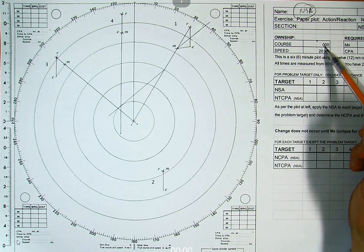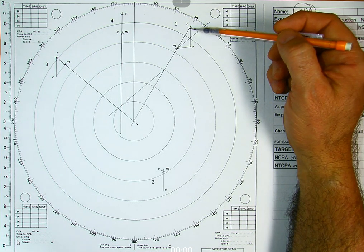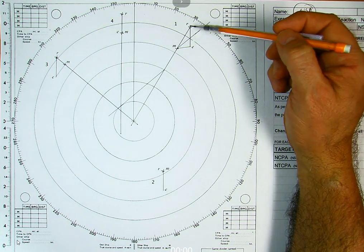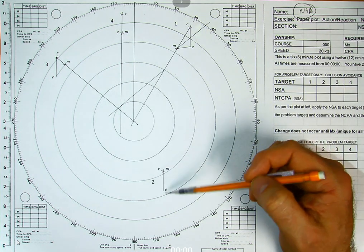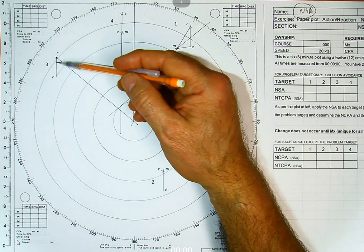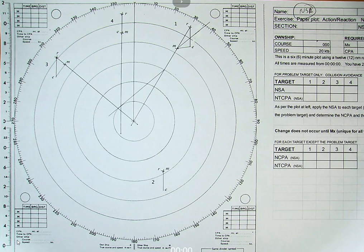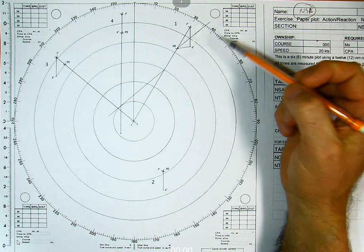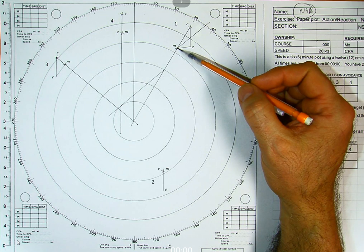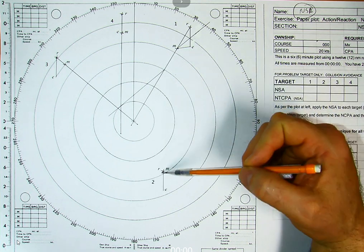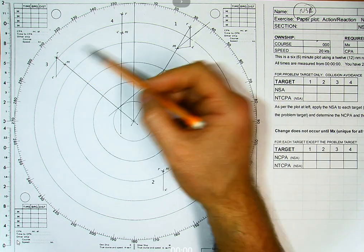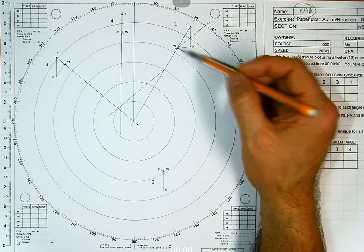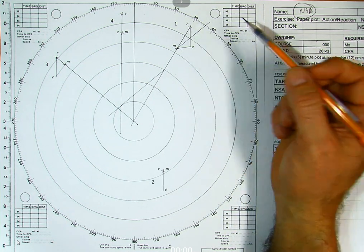Right now we're going 20 knots, course 000. We plotted an M for target 1, there was an E for that, and plotted R and E for each target. Then six minutes later we got our next range and bearing on the targets and plotted our M's. We ended up with these relative motion triangles.